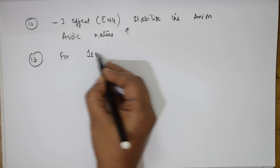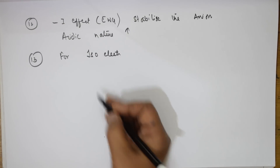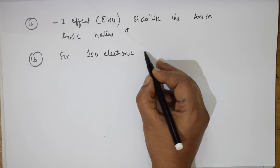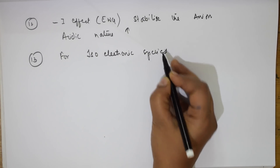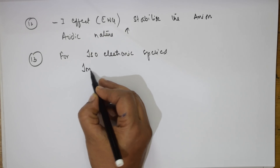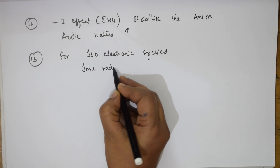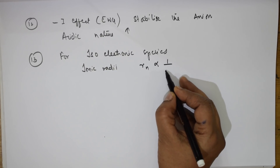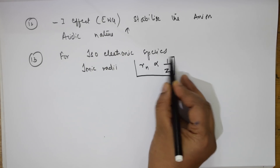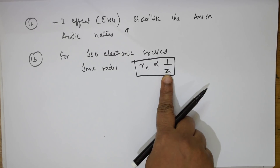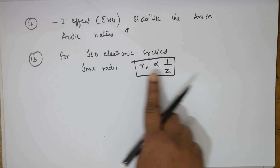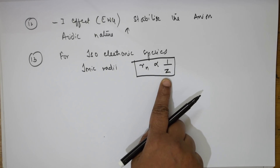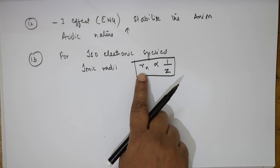For isoelectronic species — species having the same number of electrons — if they ask you to find the ionic radii trend, remember: ionic radius (Rn) is inversely related to atomic number (Z). Larger the atomic number, smaller the ionic radius; smaller the atomic number, larger the ionic radius.